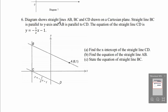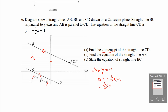Number 6. The diagram shows straight lines AB, BC, and CD drawn on the Cartesian plane. Straight line BC is parallel to the Y axis, and AB is parallel to CD. The equation of straight line CD is Y equals to negative 1/2 X minus 1. Part A: find the X-intercept of straight line CD. X-intercept is when Y equals to 0. Substituting: 0 equals to negative 1/2 X minus 1, so negative 1/2 X equals to 1. Multiplying by negative 2: X equals to negative 2. This is the answer for part A.